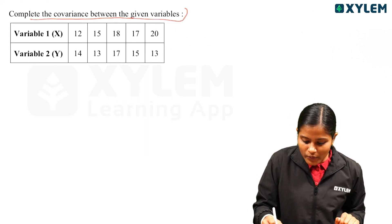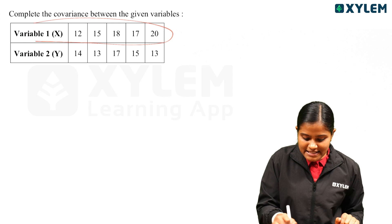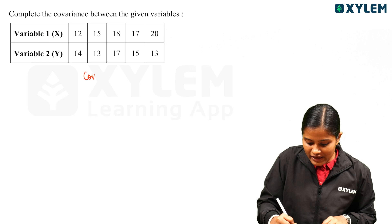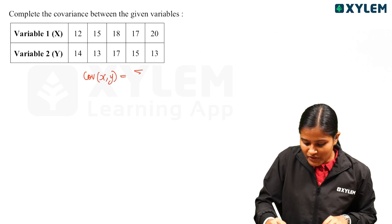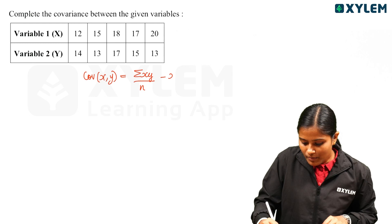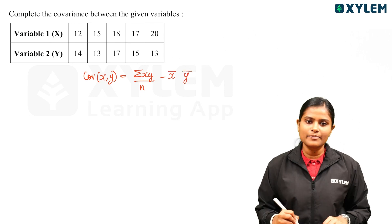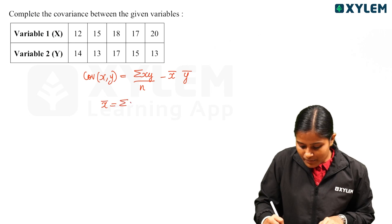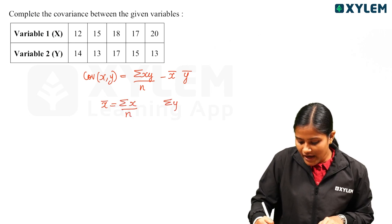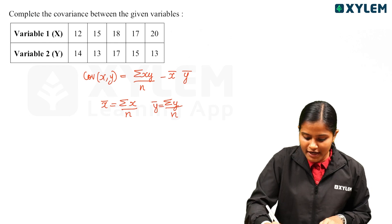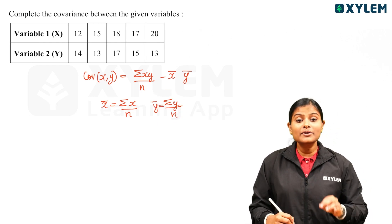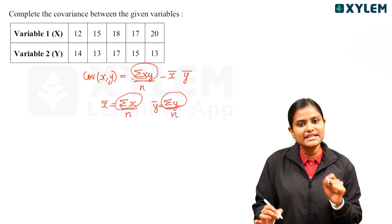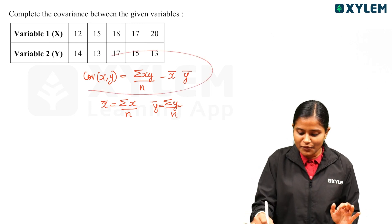Now we have a question: compute the Covariance between the given variables. We have X values and Y values. Our equation is: Covariance of XY equals summation XY divided by n, minus x-bar into y-bar. x-bar equals summation x divided by n, and y-bar equals summation y divided by n. We need to find summation x, summation y, and summation xy.